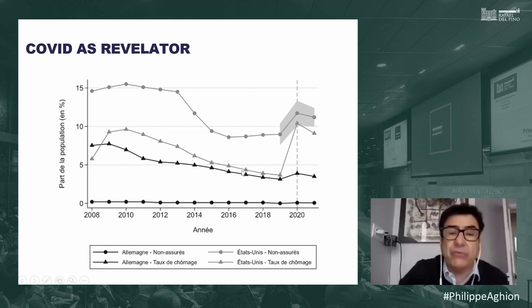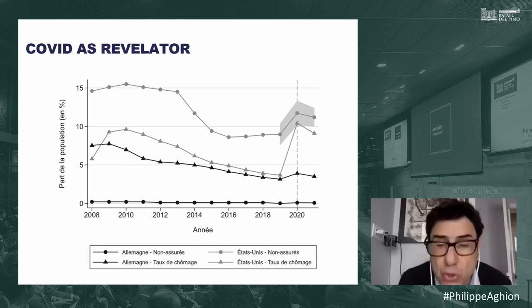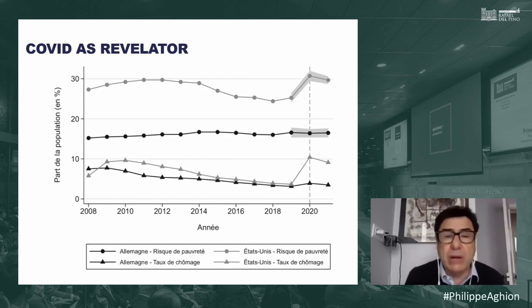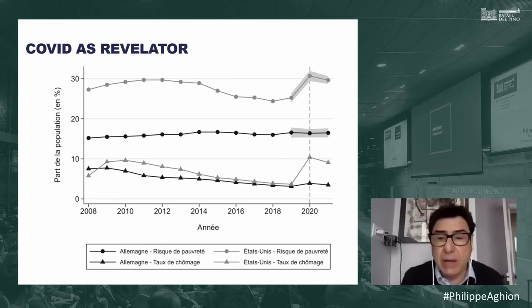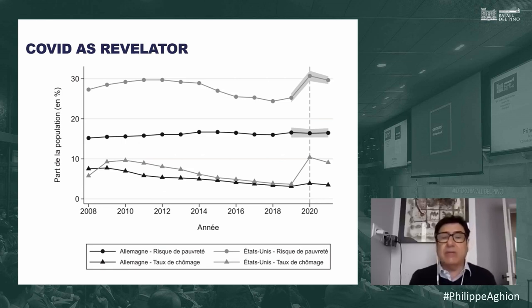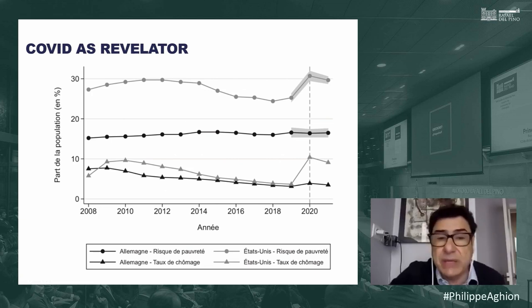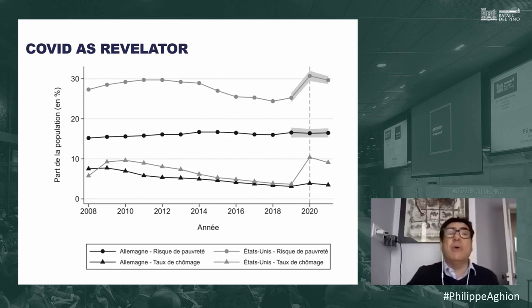The social system in the US did not protect the most vulnerable fraction of the population against COVID. The poverty rate went up in the US with COVID — when you lose your job, you are likely to fall into poverty. No such thing in Germany, where the poverty rate remained constant. That's the downside of US capitalism: it does not provide good protection.